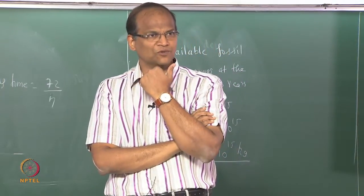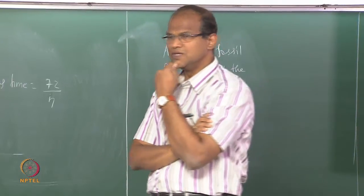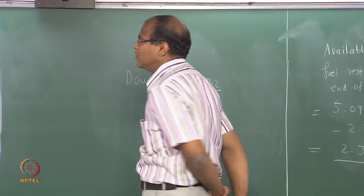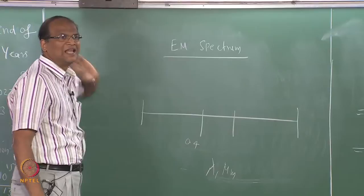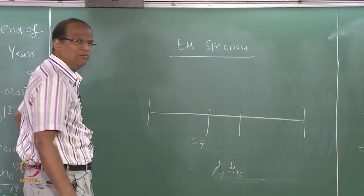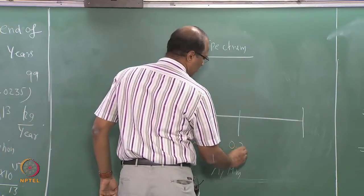In photosynthesis, CO₂ is absorbed from the atmosphere; in the respiration and decay reaction, CO₂ is released back into the atmosphere. During photosynthesis, phytoplanktons and plants absorb energy in the form of visible light at wavelengths 0.43 micrometers and 0.66 micrometers — which is orange. The visible part of the spectrum is 0.4 to 0.7 micrometers.